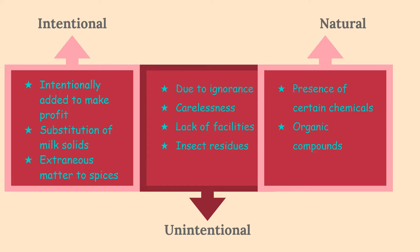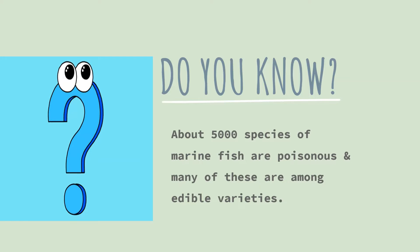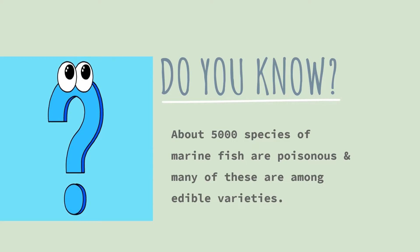Unintentional adulteration is totally unintentional but it can also be hazardous. Next is natural adulteration, which just includes some organic compounds and presence of certain chemicals which are naturally present in the food product and which have very less effect on human health. Here I have a food fact for you: about 5,000 species of marine fish are poisonous and many of these are among edible varieties. So people should have a basic understanding about physical, chemical, microbiological, and sensory quality of foods in order to have long-term health.